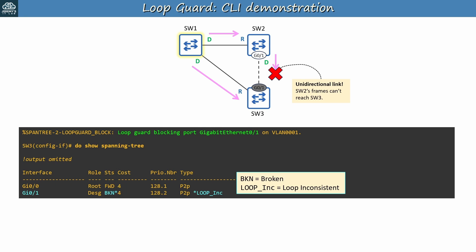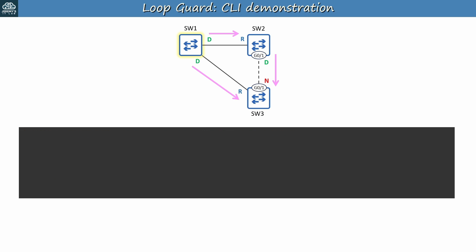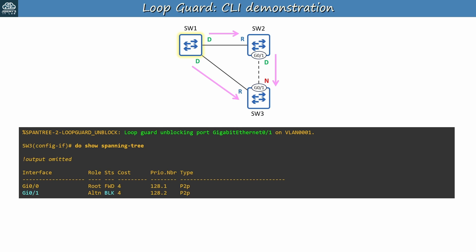But then, perhaps someone adjusts the cable and the data starts flowing again — Loop Guard automatically unblocks the port because it starts receiving BPDUs again from SW2. As you can see, G0-1's status is now 'blocking', not 'broken', and it doesn't say 'Loop Inconsistent' anymore. Like Root Guard, Loop Guard automatically re-enables a port if the problem is fixed — you don't have to issue any commands to re-enable the port.